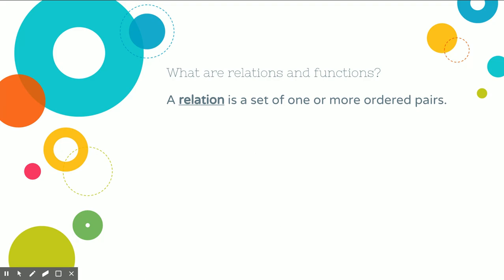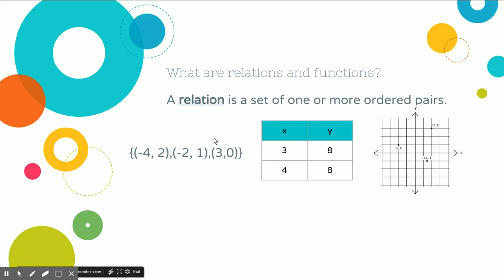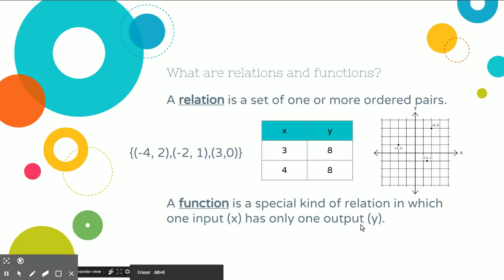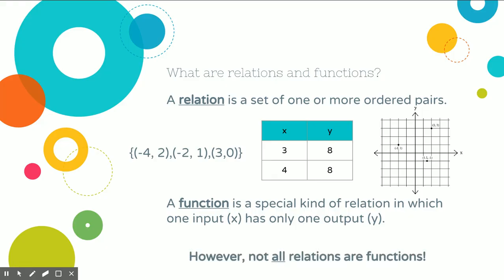A relation is a set of one or more ordered pairs, and relations can also be written as any of these forms — with just one ordered pair or more than one. A function is a type of relation in which there is only one input, or x value, for one output, or y value. So x can be called an input or the domain, and y can be called the output or the range.